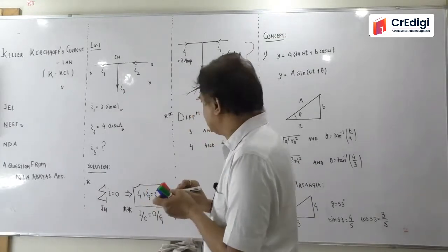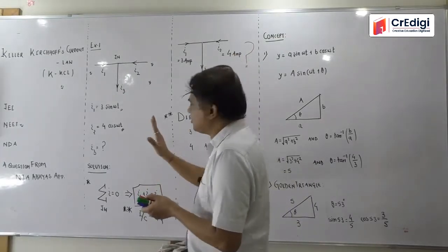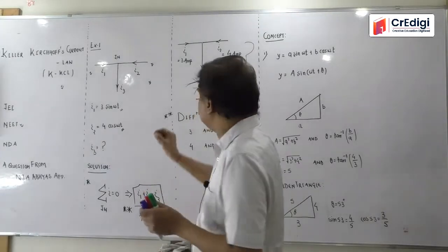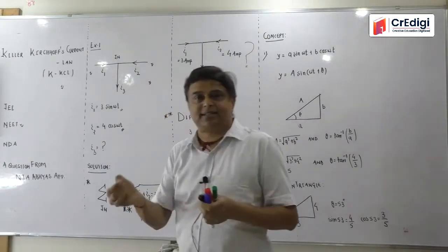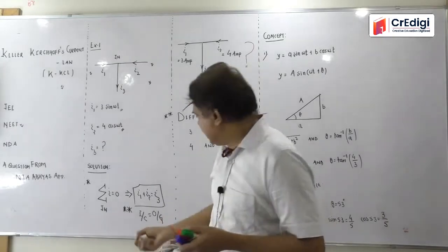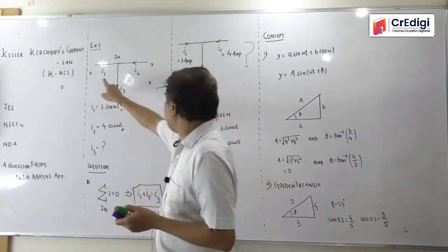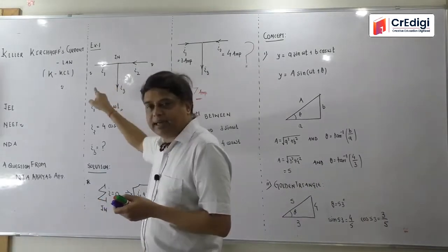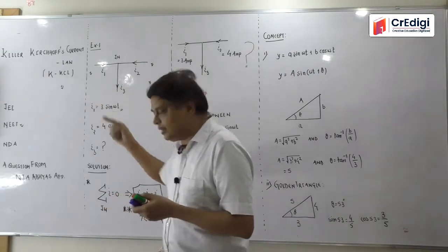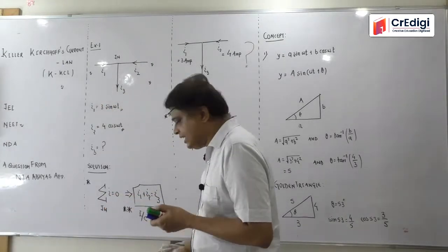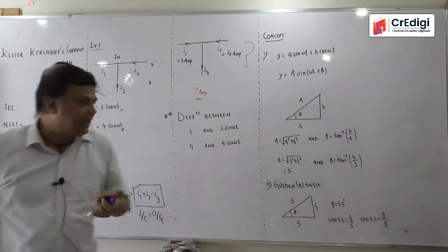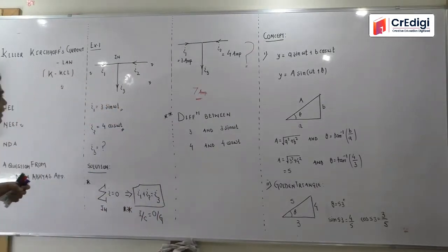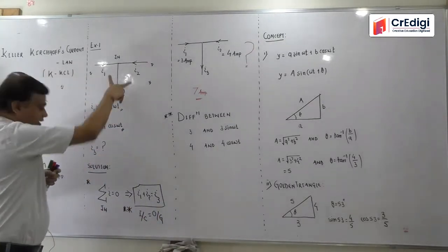Student feels that it is simply a question on Kirchhoff's current law and at the junction, I have to make algebraic sum of the current zero. And this is the situation here. So I1 and I2 are the incoming currents and I3 is the outgoing current. I told you that in this case, incoming should always be equals to outgoing. So incoming I1 or I2 and it will be equals to I3.